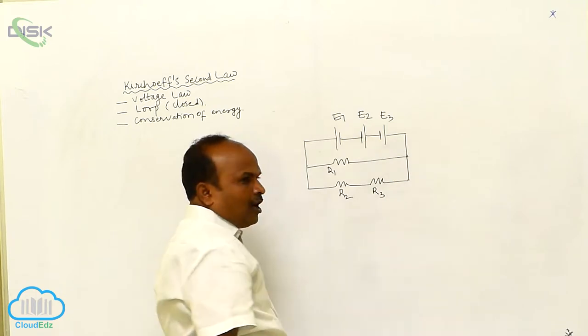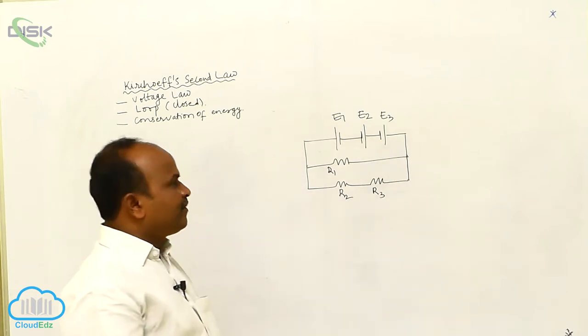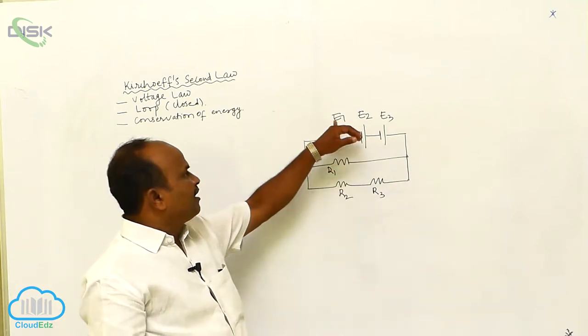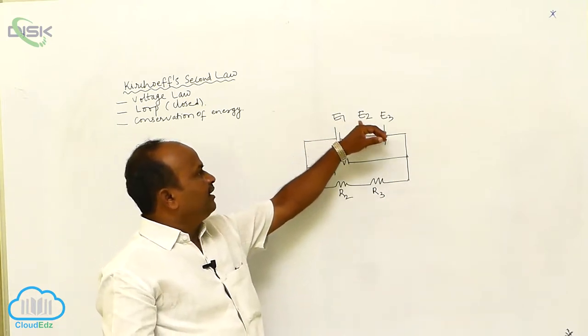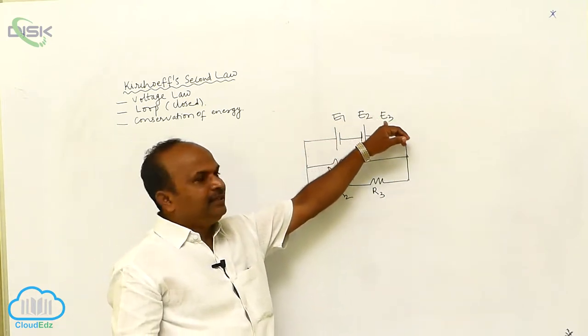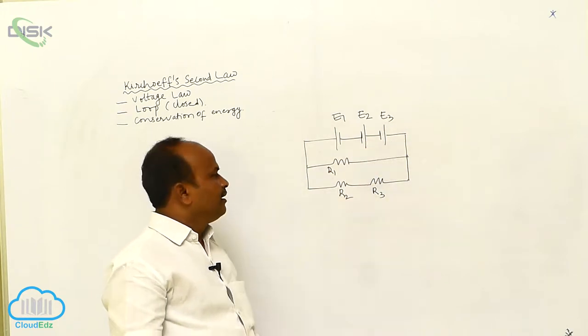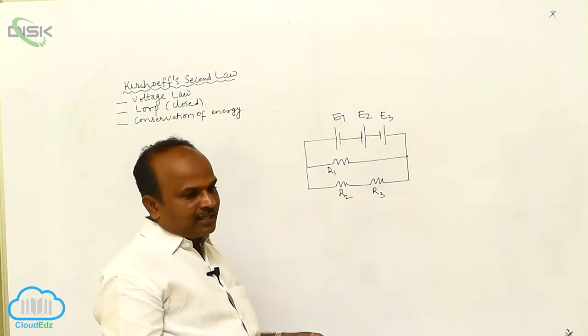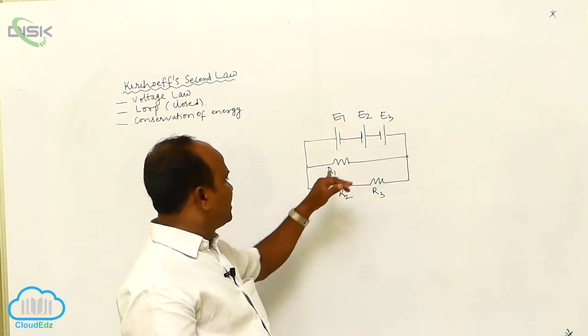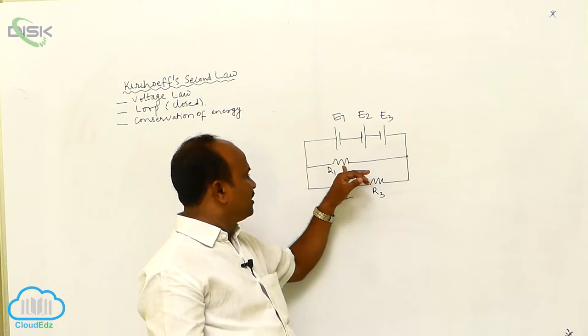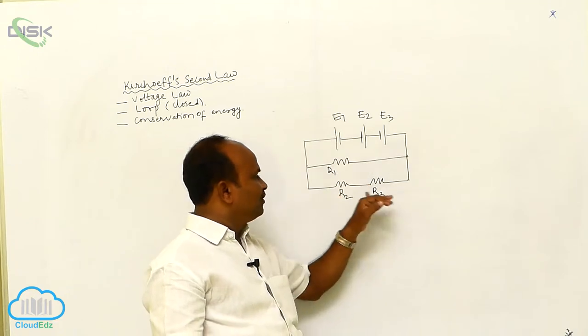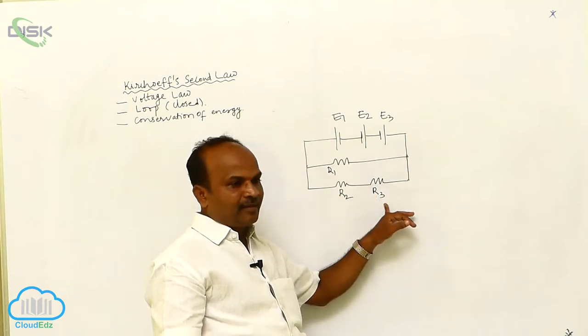How many EMFs are there? E1, E2, E3 — three EMFs. And how many resistors are there? R1, R2, R3 — three resistors.